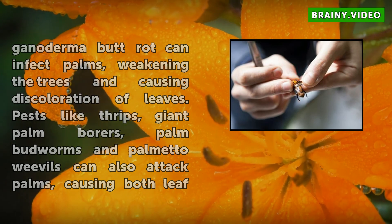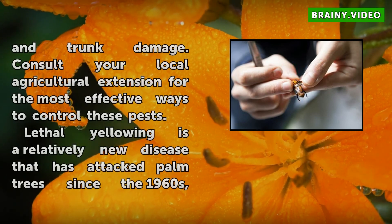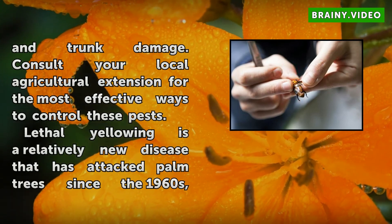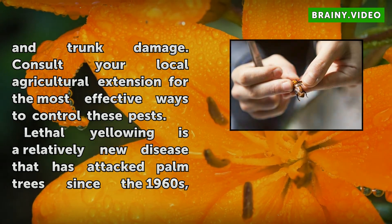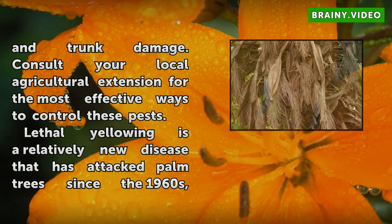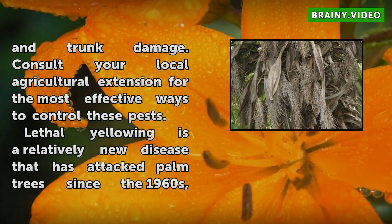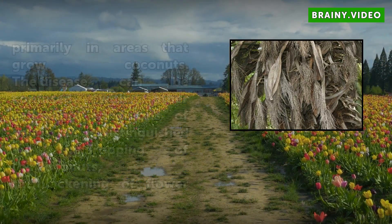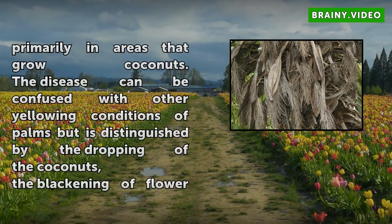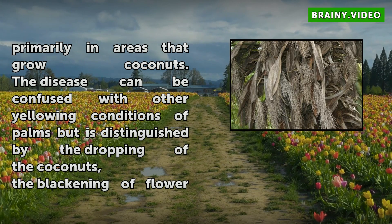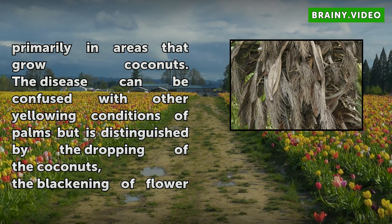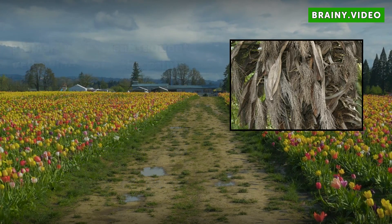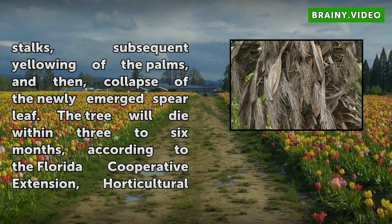Lethal yellowing is a relatively new disease that has attacked palm trees since the 1960s, primarily in areas that grow coconuts. The disease can be confused with other yellowing conditions but is distinguished by the dropping of coconuts, the blackening of flower stalks, subsequent yellowing of the palms, and then collapse of the newly emerged spear leaf. The tree will die within three to six months, according to the Florida Cooperative Extension Horticultural Department. Injection of oxytetracycline is done to save trees considered vital.